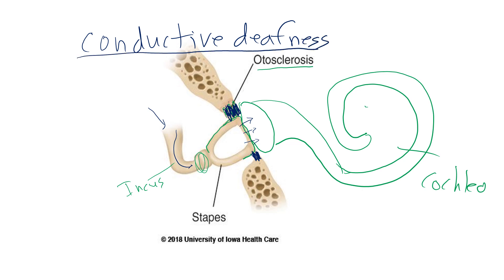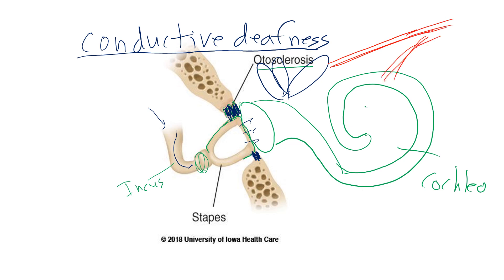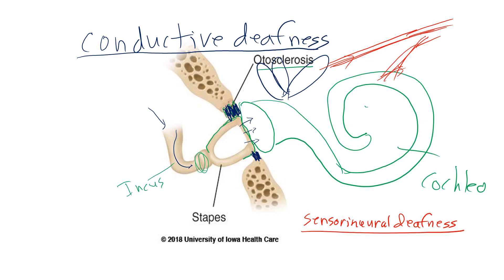If there's something wrong with how the nerves carry signals from the semicircular canals or cochlea up to the brain through the nervous system, that is referred to as sensorineural deafness. Those are the two main types of deafness: conductive and sensorineural.